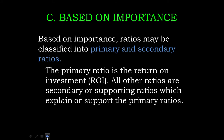Our third classification is based on importance — that is the significance. There are primary and secondary ratios. The primary ratio is Return on Investment, which is ROI. All other ratios are secondary or supporting ratios, which explain or support the primary ratio.